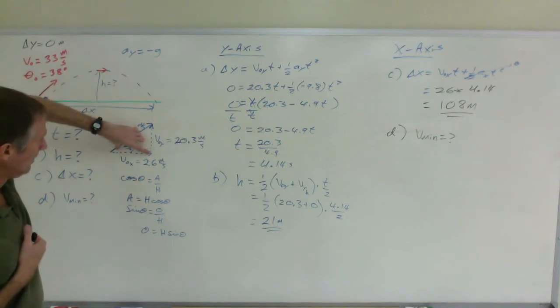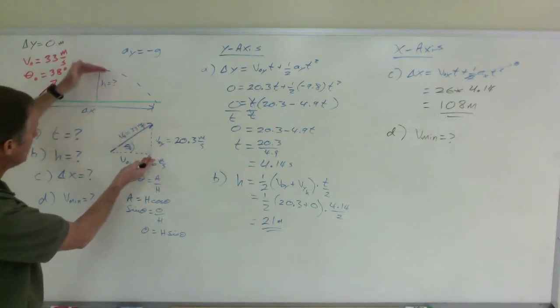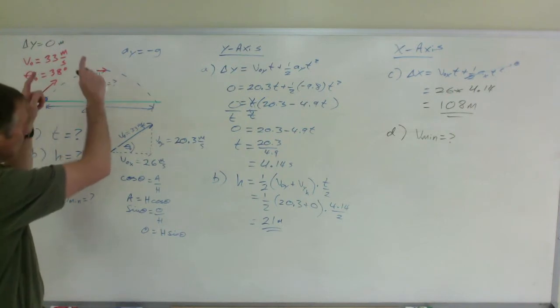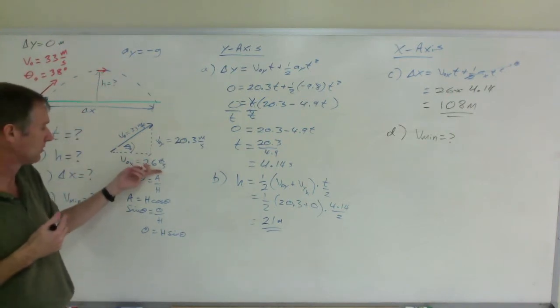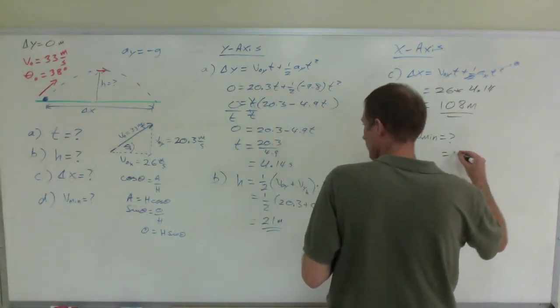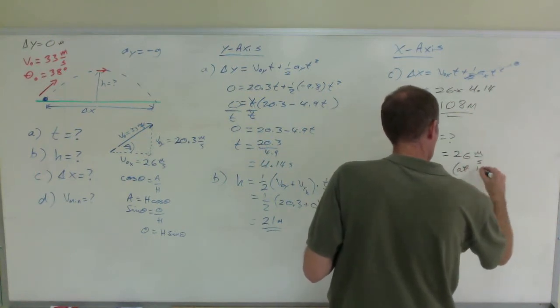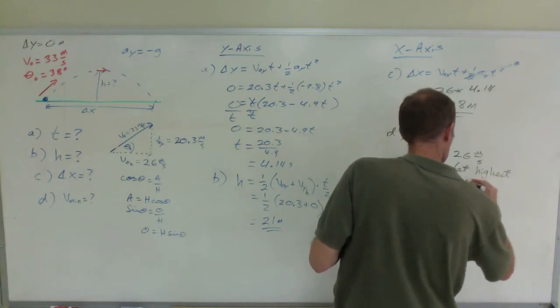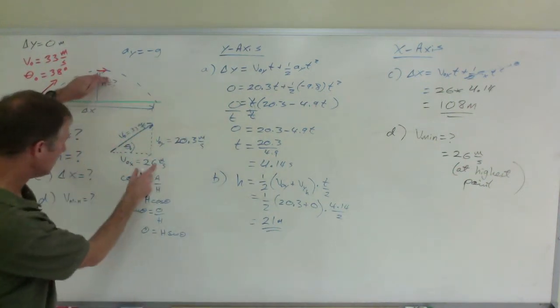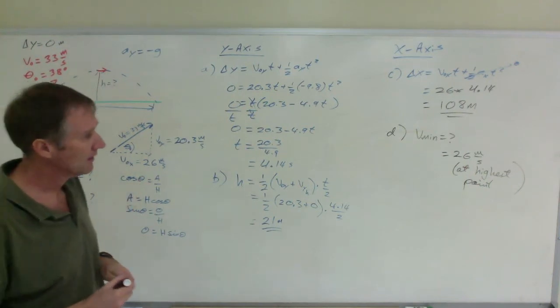It always has its horizontal speed. And so, although the vertical velocity dropped down to zero because it stopped rising, the velocity, the overall velocity is the horizontal velocity at that point. So it can never go slower than 26 meters per second, and that occurs right up here at its highest point. So v minimum equals 26 meters per second, and it's at the highest point. Again, at the highest point, it has just Vx. It can never lose that. And that's it.